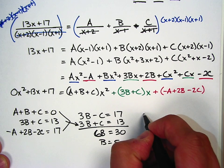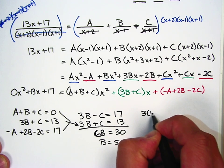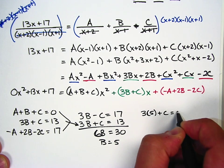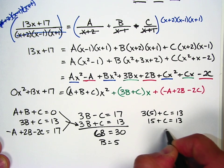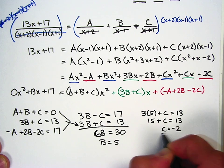If B equals 5, I can plug it back in and say 3 times 5 plus C equals 13. 15 plus C equals 13. C equals negative 2.